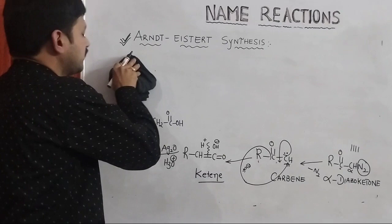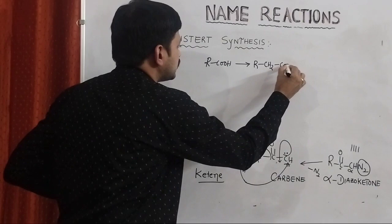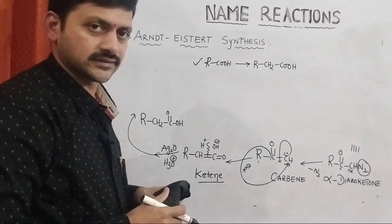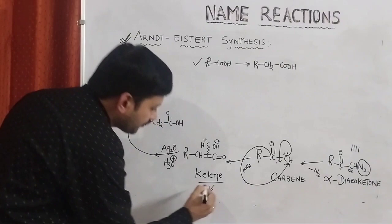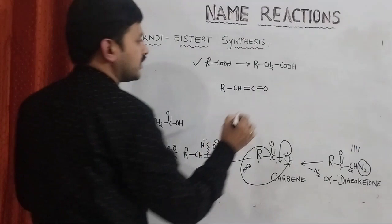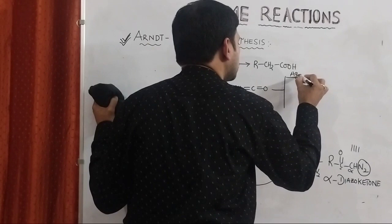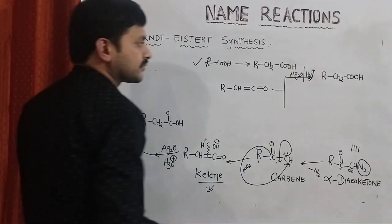From this reaction, we understand that the reactants are simple carboxylic acids. If you want to increase the length of the carbon chain by one CH2 unit, we can do this transformation using this synthesis. Along with the formation of higher chain carboxylic acid, we can get some more products also. We have the ketene intermediate RCH=C=O. In the first case, this is subjected to hydrolysis in the presence of water, giving the corresponding carboxylic acid RCH2COOH.